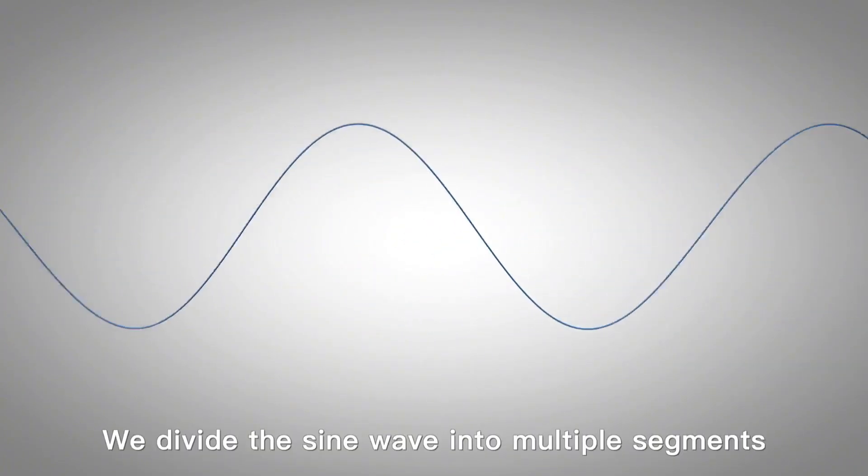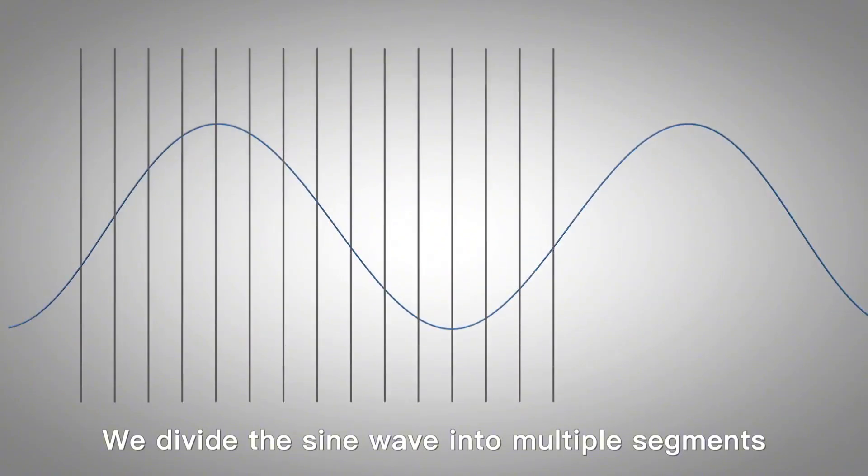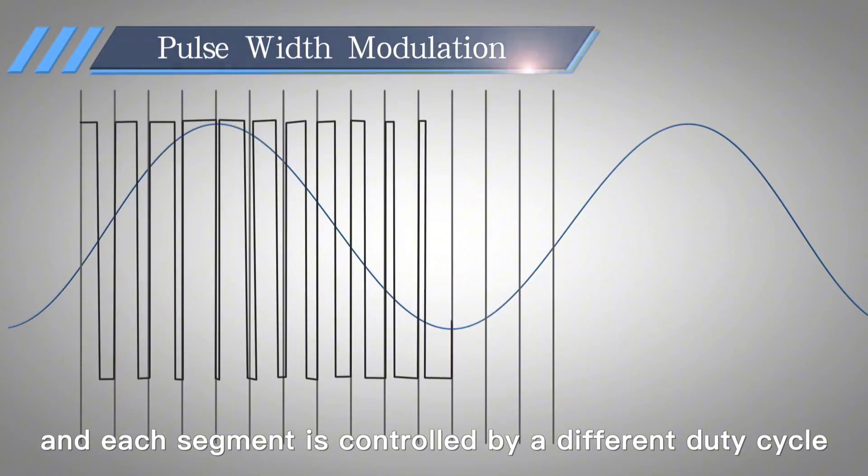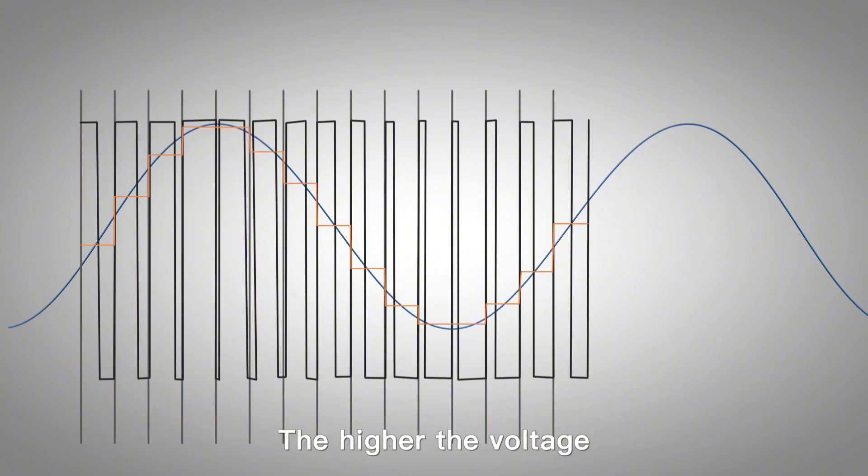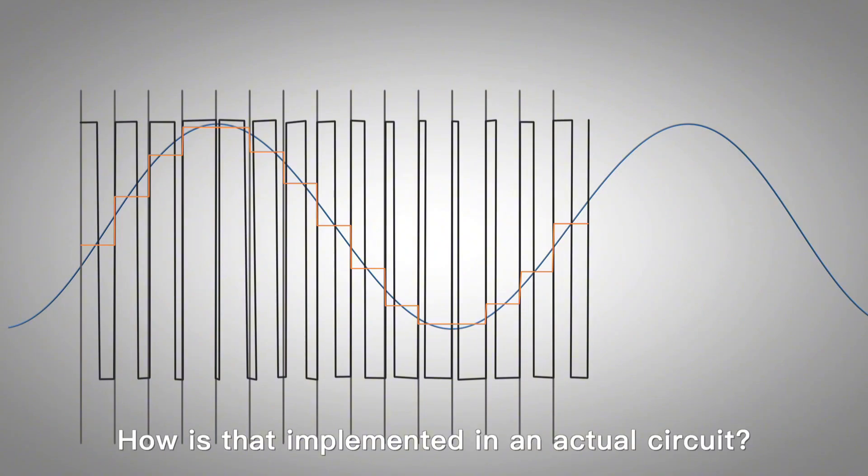We divide the sine wave into multiple small segments. Each small segment is controlled by a different duty cycle, so that the average voltage of each segment is different. The higher the voltage, the greater the duty cycle. How is it implemented in the actual circuit?